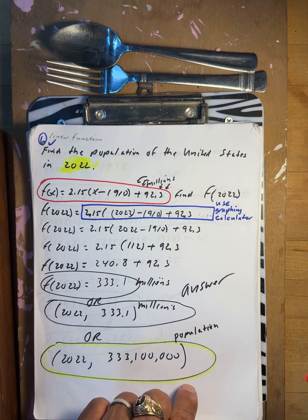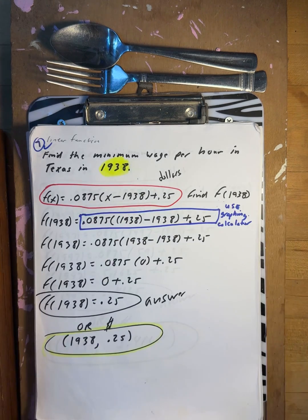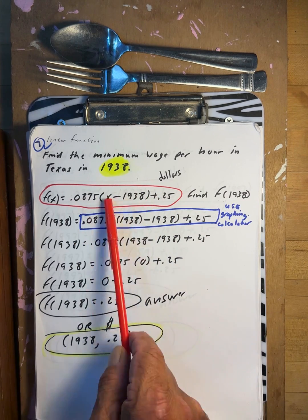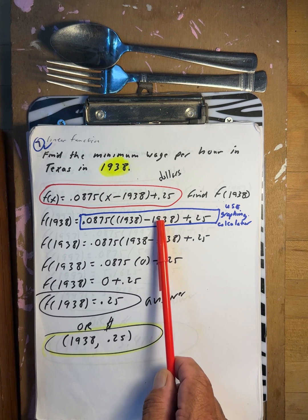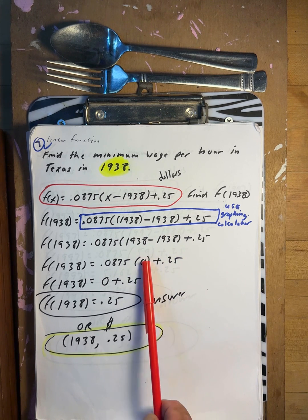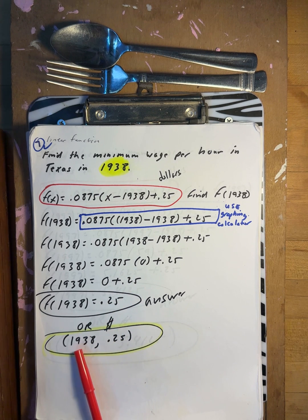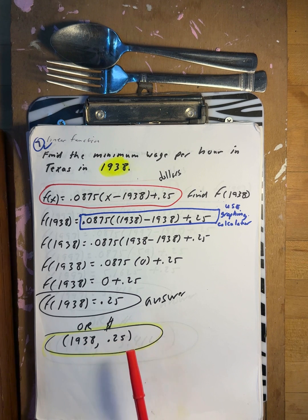Find the minimum wage in Texas in 1938 for one hour of work. f of 1938: 1938 minus 1938 is 0, 0 times the coefficient is 0, plus 0.25. So in 1938, the minimum wage per hour in Texas was 25 cents.